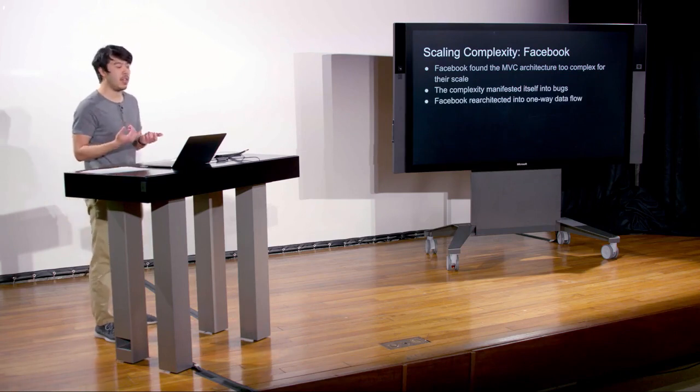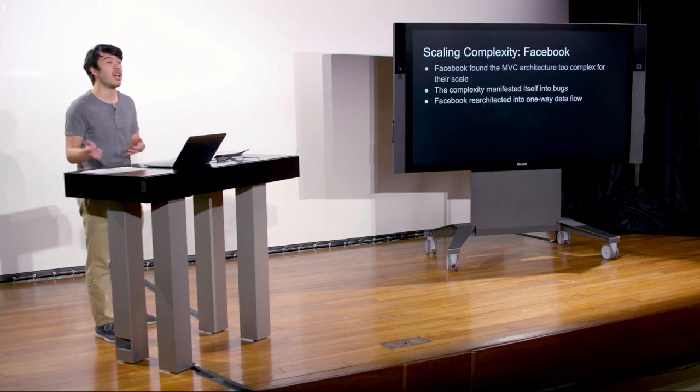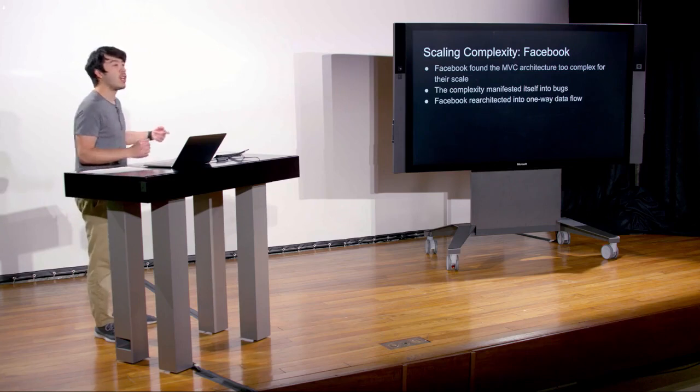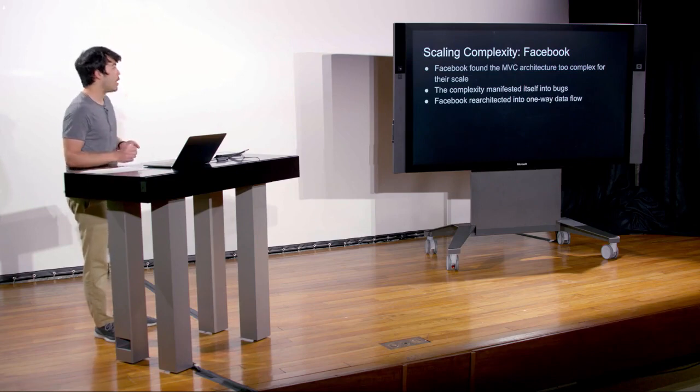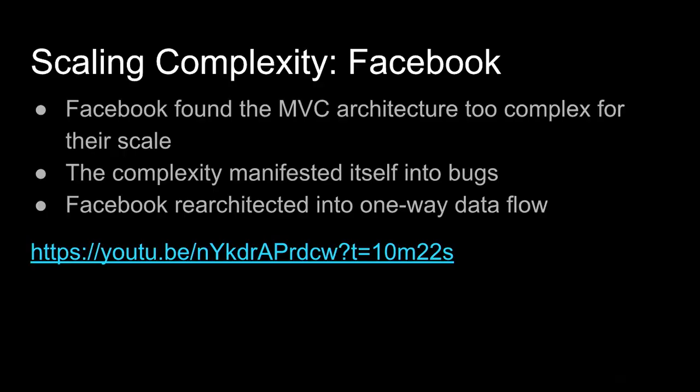What they did is they re-architected everything into a single direction data flow — data only comes in from one direction, and there's only one way to update that data. If you want additional background on this problem, you can watch a YouTube video by Jing Chen, who talks about exactly what the bug was and why they created this new architecture. This new architecture was called Flux — a new application architecture for React that utilizes a unidirectional data flow.